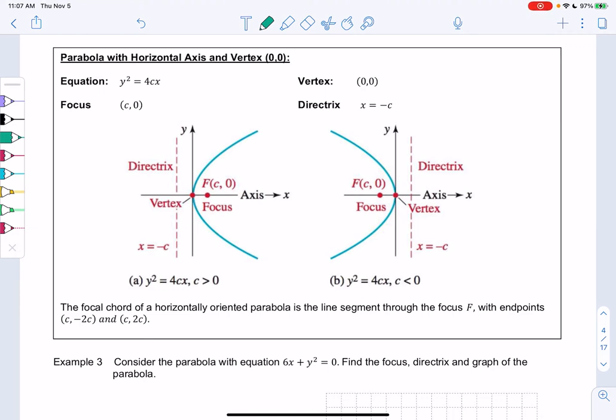Section 7.1, example 3. So we're going to look at parabolas with a horizontal axis. So basically the same parabolas, but rather than going up and down, we'll now go left and right.